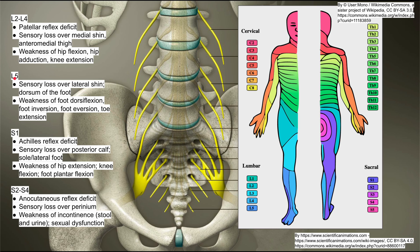Next is L5 radiculopathy. There's no reflex deficit associated with this one. There's a sensory loss over the lateral shin and the dorsum of the foot, which matches the L5 dermatome shown in the diagram. The motor deficits for L5 radiculopathy are all down at the foot: weakness of foot dorsiflexion, foot inversion, foot eversion, and toe extension.